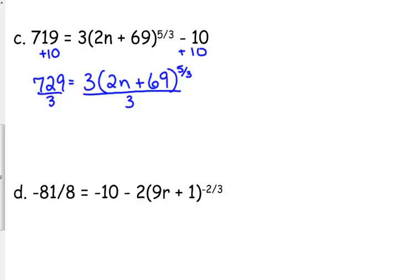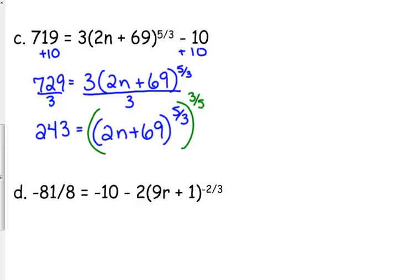You cannot put that 3 inside those parentheses. I might be tempted to strangle you if you do. Is that 243? Because I've now said it about 50 times. Now, the expression with the variable is isolated. So we can apply the 3 fifths power, the reciprocal 3 fifths power. So we have the fifth root of 243 cubed is equal to 2n plus 69.